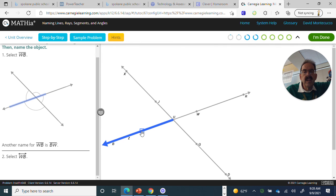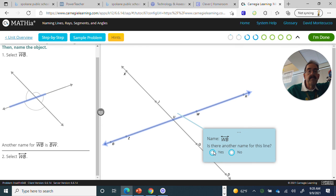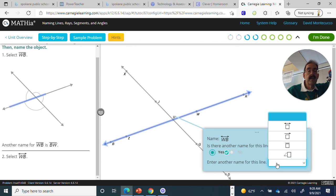Now we want to select line WB. So let's see if this is what they meant. So a line goes on forever and ever in both directions. Is there another name? Yes. BW. And actually, this could have all sorts of names, right? BW, ZW, RW, right? But we'll just keep it simple and say line BW.